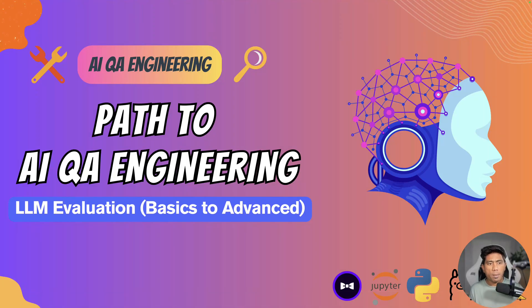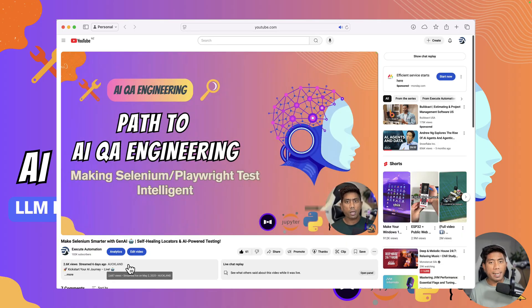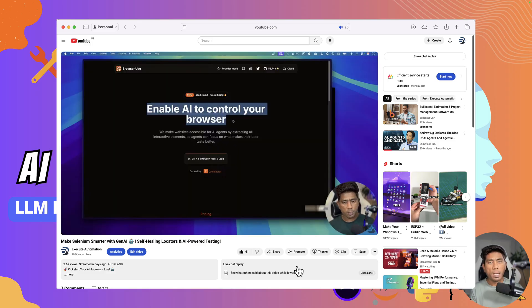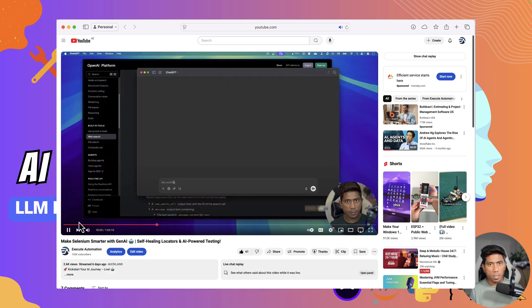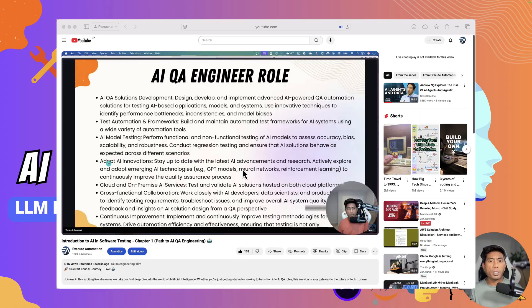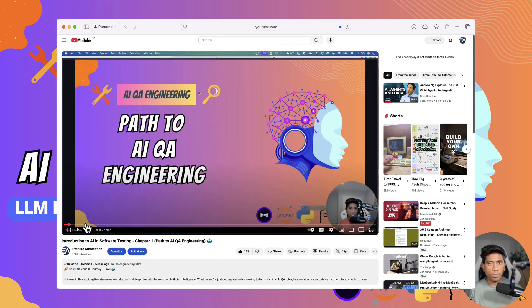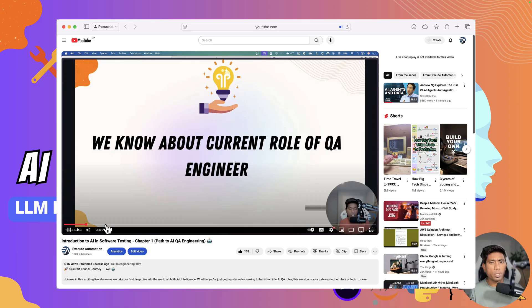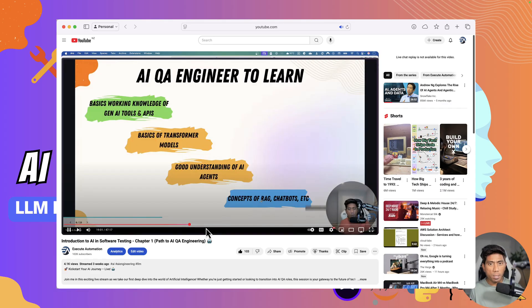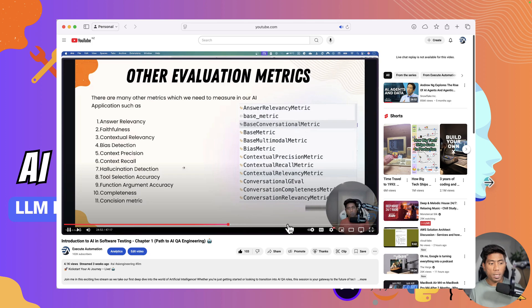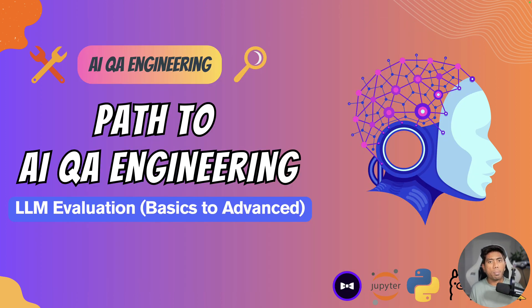Hi guys, welcome to my mini series on Azure Automation on Path to AI QA Engineering. If you have seen my earlier videos in the YouTube live series, I talked about an introduction to the path to AI QA engineering, why AI QA engineering is so important, and how the QA engineering landscape is transforming towards artificial intelligence. It's not just about using the toolings, but also about how you can test an application built using large language models. We also talked about how we can make Selenium or Playwright tests smarter using the power of large language models.